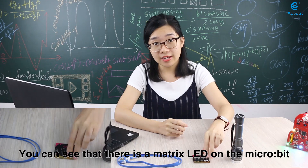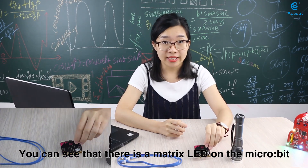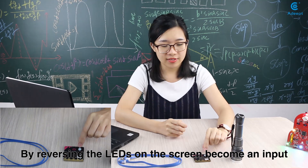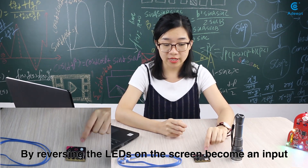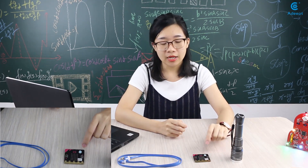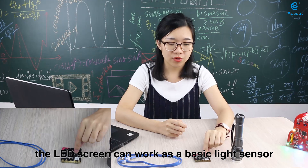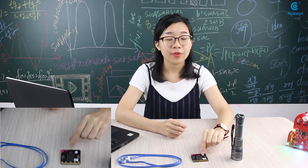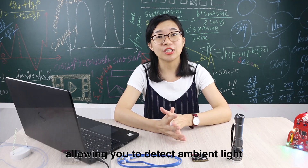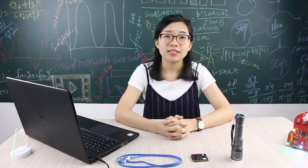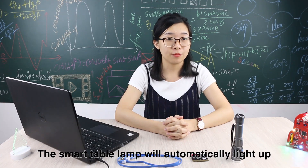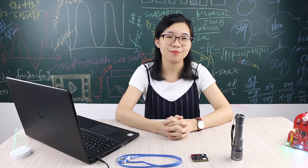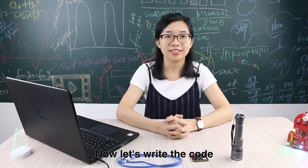You can see that there is a matrix LED on the micro:bit. By reversing the LEDs of the screen to become an input, the LED screen can work as a basic light sensor, allowing you to detect the ambient light. The smart table lamp will automatically light up when the light is not enough.